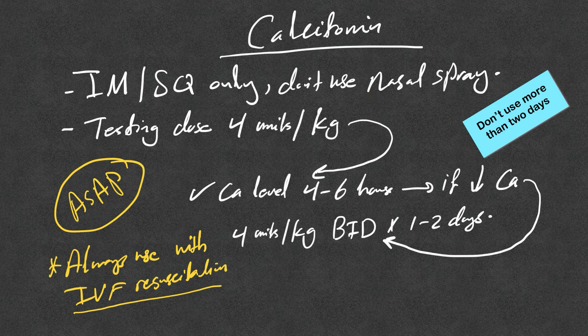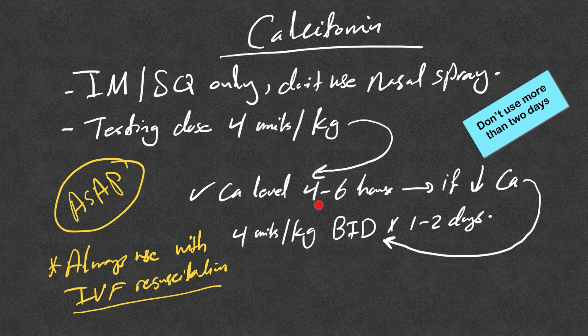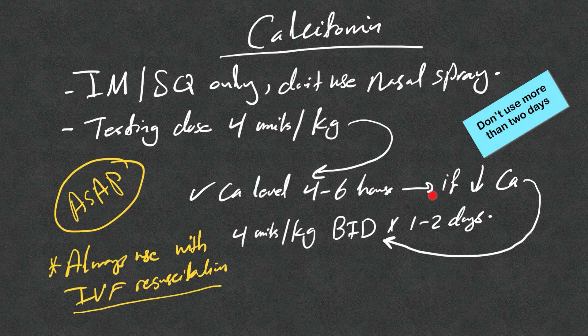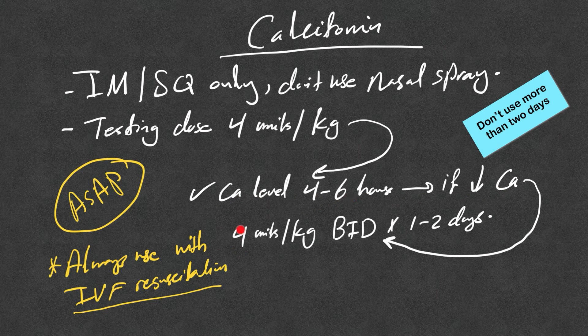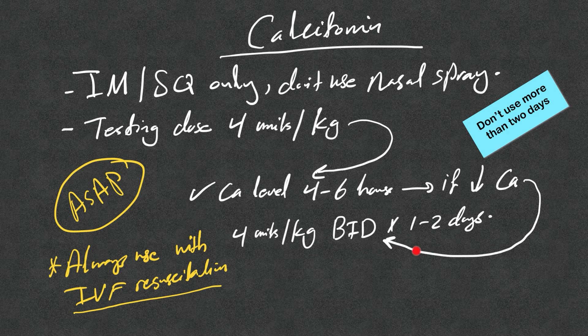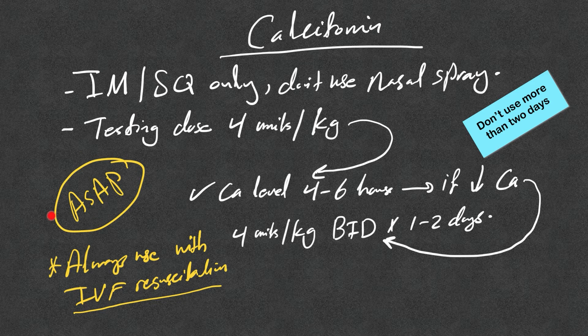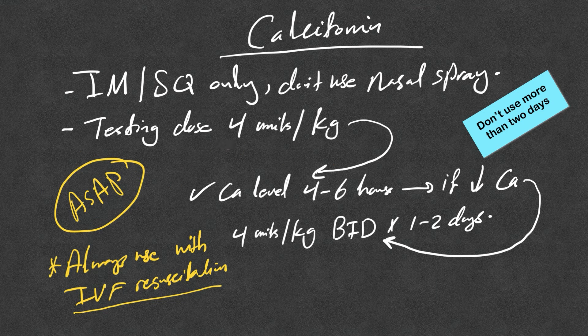We usually give testing dose of four units per kg and check calcium in four to six hours. If there is a drop in calcium, then we give four units per kg BID for one to two days. Always use with IV fluid resuscitation and as soon as possible. If there is no drop in calcium, that's probably indicating this patient will not respond to calcitonin.